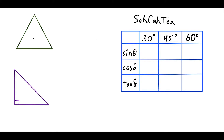The two shapes we're going to use are the equilateral triangle and the isosceles right triangle. For the equilateral triangle, let's assume each side is two units long. I'm going to drop down an altitude, which is going to cut the third side in half, so each piece is going to be one unit long. To solve for the altitude, I'll apply the Pythagorean theorem to the right triangle on the left.